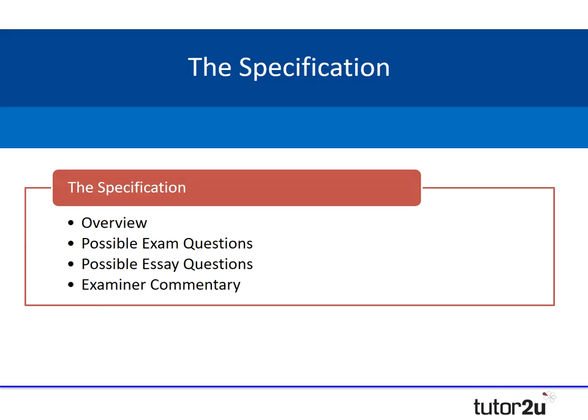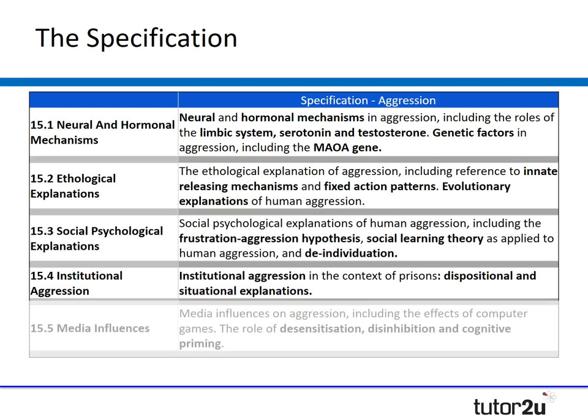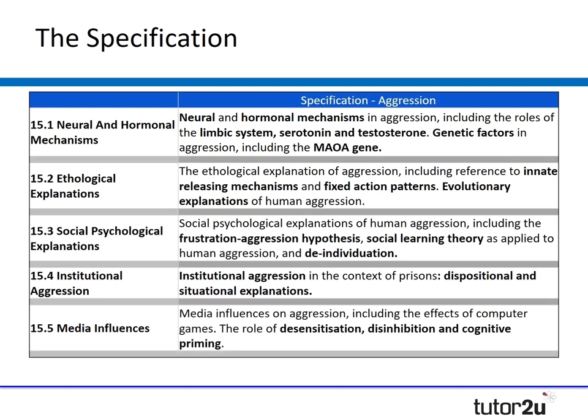The aggression specification is broken into five key points. First, you have the neural and hormonal mechanisms, with key named points including the limbic system, serotonin, testosterone, and genetic factors including the MAOA gene.